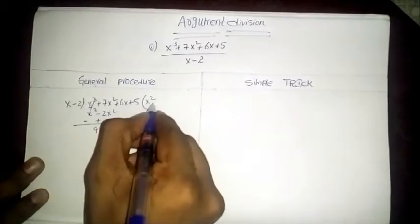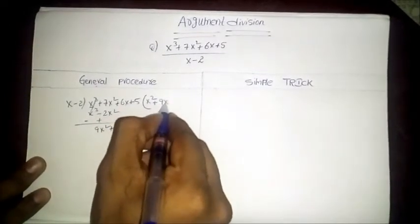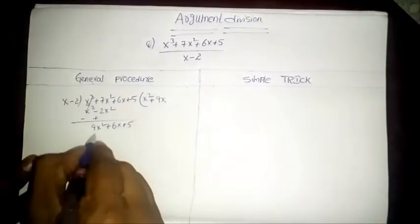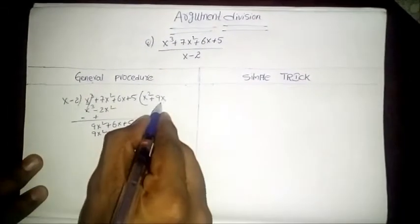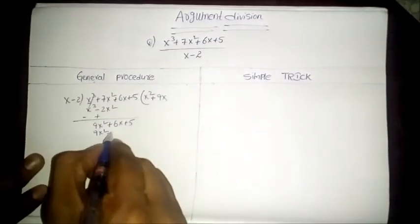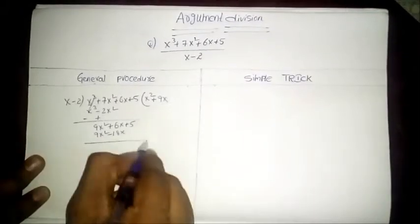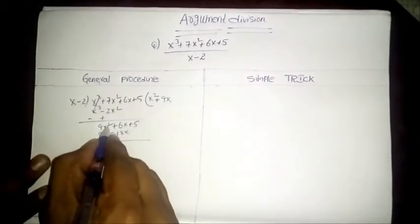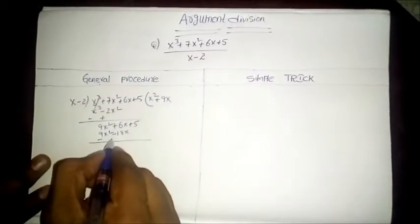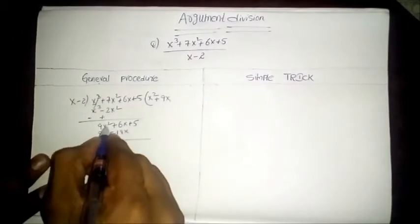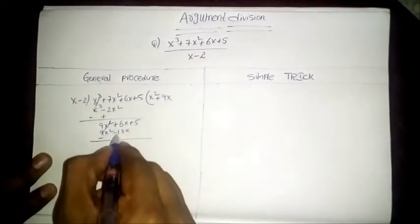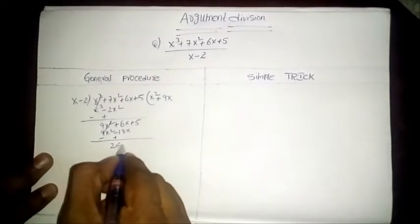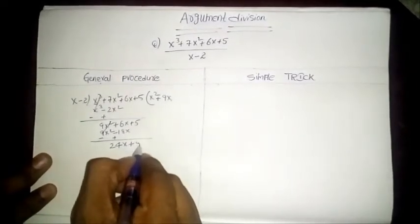Here in the next step we multiply 9x with x to get 9x squared, and 9x into minus 2 gives minus 18x. For cancellation of x squared, we put minus sign here and plus there, so 9x squared gets cancelled. Then 6x plus 18x gives 24x plus 5.